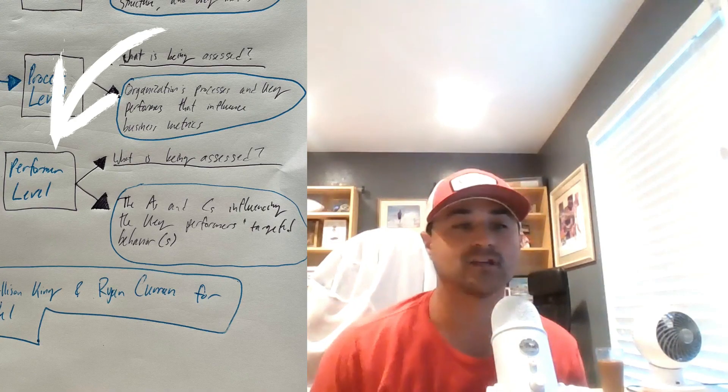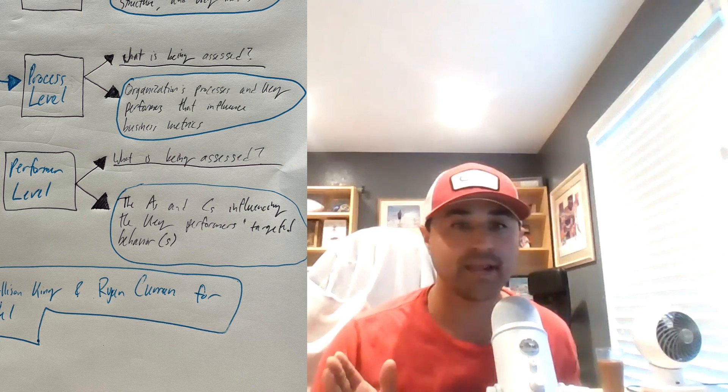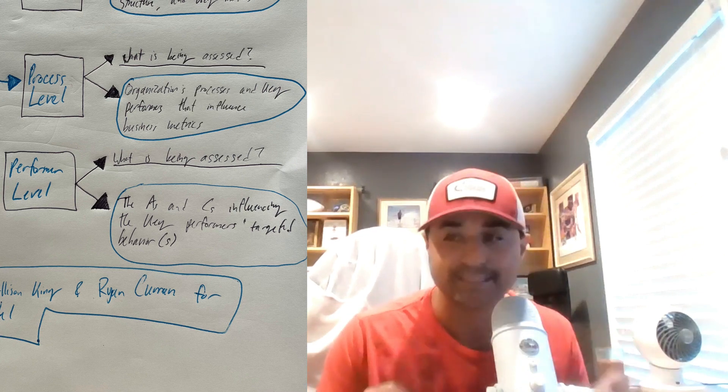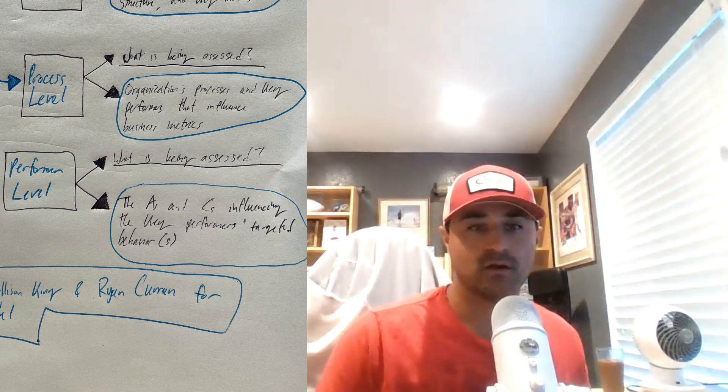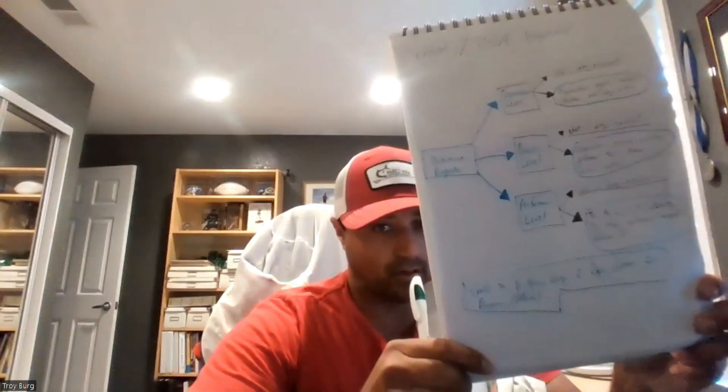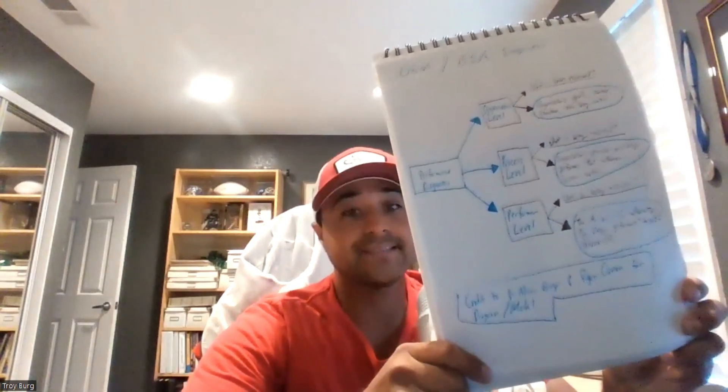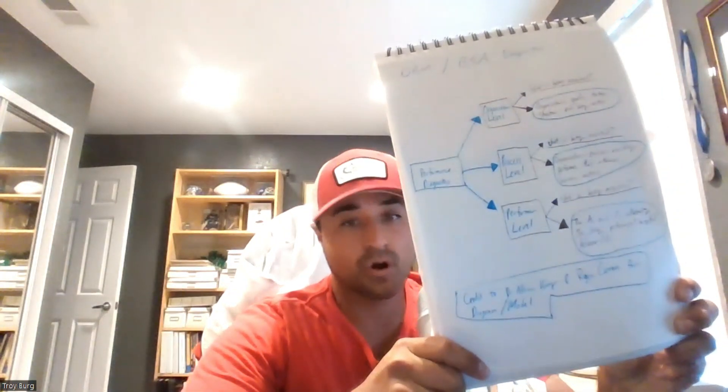Just like the other two levels, we've got to ask ourselves what is being assessed. Why are ABAers good at this level? It's all about the A's and C's influencing the key performers' targeted behaviors. The performer level is about the antecedents and consequences of the key performers' targeted behaviors. Do you mean the A's and C's that we use in ABA? Yeah — same exact thing, literally no difference.